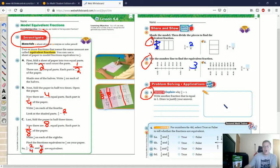And then number five, we want to write another fraction that is equal to one. So I am going to start by drawing a shape here. So here is my whole shape.